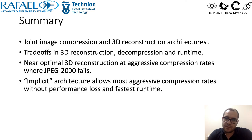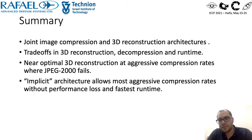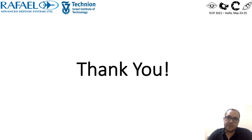To summarize, we proposed three architectures for joint image compression and 3D reconstruction. Tradeoffs exist between 3D reconstruction performance, image decompression quality, and runtime. Near-optimal 3D reconstruction is obtained at a wide range of compression rates. The highest compression rates are reached by the implicit model, which is also most efficient in terms of runtime. Thank you.